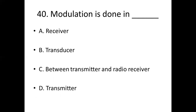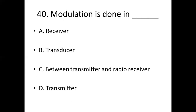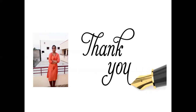40th bit. Modulation is done in dash. Option A: receiver. Option B: transductor. Option C: between transmitter and radio receiver. Option D: transmitter. Answer: Option D, transmitter.